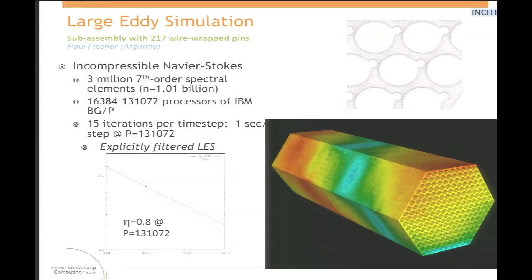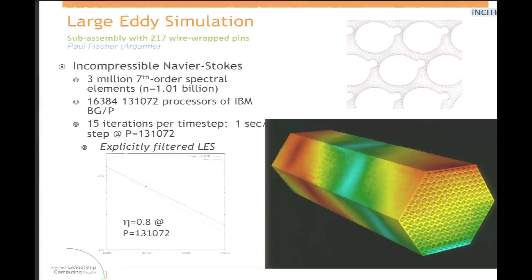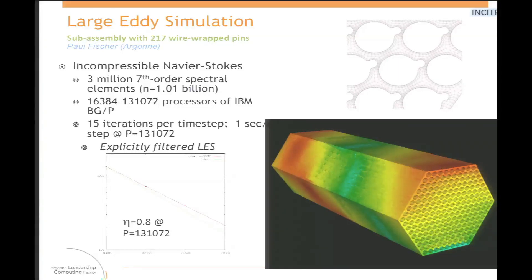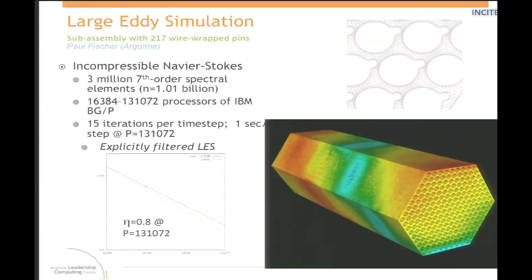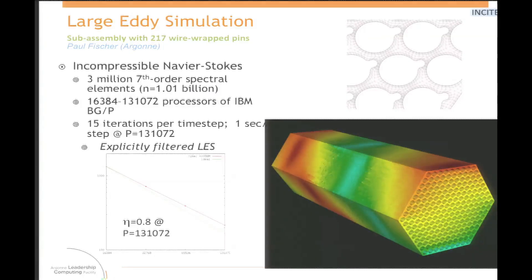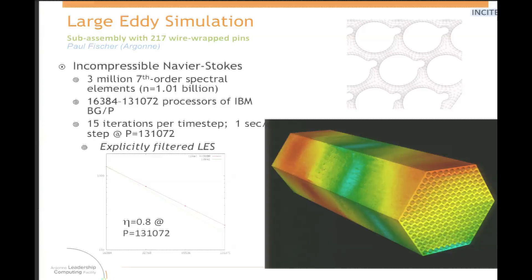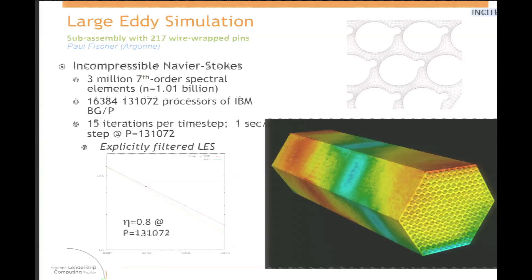This next result is a large eddy simulation using the spectral element code Nek5000, developed by Paul Fischer — it's open source and freely downloadable. The code shows excellent scaling on both Blue Gene P and Q. Although the simulation was done on the Blue Gene P in 2009 as a hero simulation, it's a regular simulation now. In fact, it forms part of simulations Paul Fischer is doing with engineers at GE Global Research and GE Hitachi Nuclear for nuclear reactor design, where they carry out similar simulations in a fairly routine manner. What was a hero simulation in 2009 is regular production now.